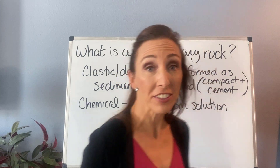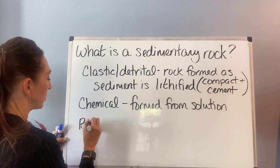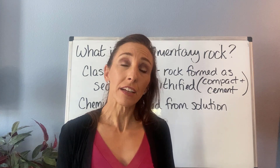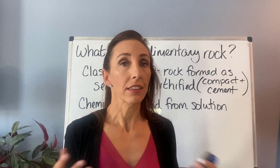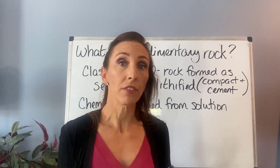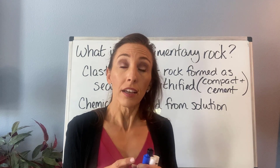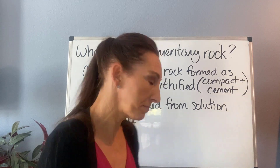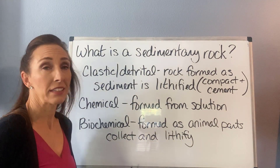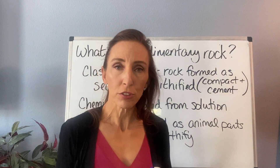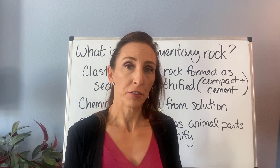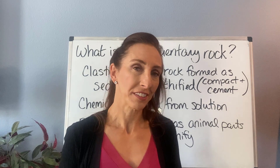Finally, we have our third type, which is going to be biochemical — sometimes called biological sedimentary rock. This is formed from life processes, but not organic carbon-type stuff. Rather, things like the shells of animals might collect and form a rock, which would be an example of a biochemical rock. Animal shells collected in a certain area can form very fossil-looking sedimentary rocks, and those are called biochemical sedimentary rocks.